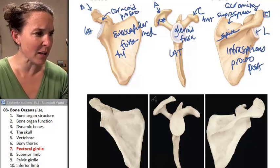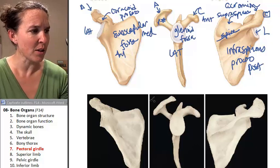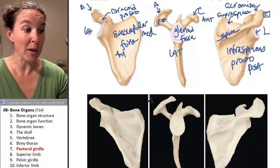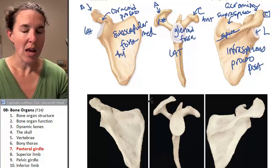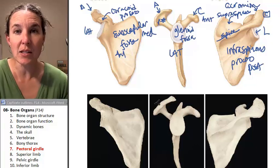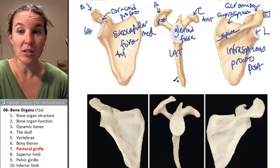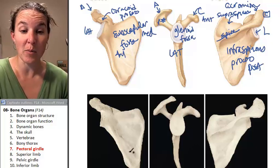I think that's everybody we had to cover for the pectoral girdle. Next up is the superior limb, and there's lots of structures there.